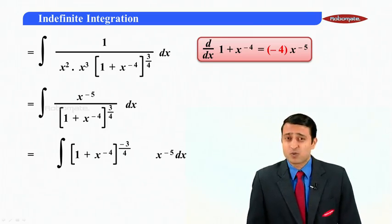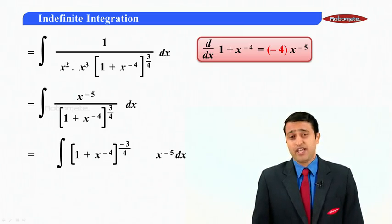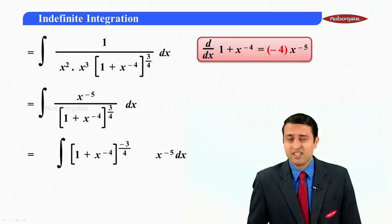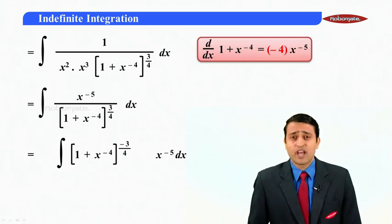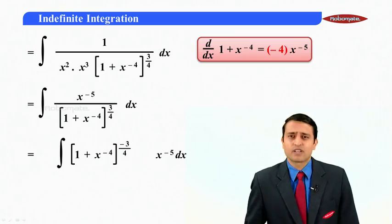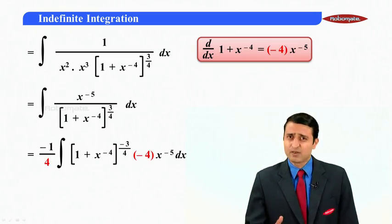So let us check if the derivative can be adjusted. So it is 1 plus x raise to minus 4 which on differentiating gives me minus 4 x raise to minus 5. My dear students we have x raise to minus 5. What we do not have is a minus 4 but that is fairly easy for us. We will multiply divide by minus 4.